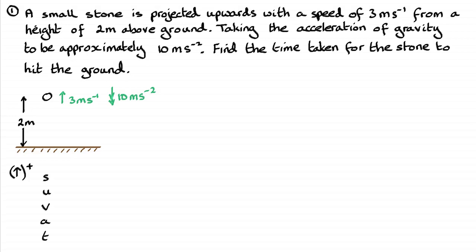It's a typical SUVAT-type equation where you've got to list your variables S, U, V, A and T. I've taken upwards as positive, which is always a good idea in the direction of motion, and we're starting from the point of projection. When we're trying to find the time taken to hit the ground, the stone is going to go up, come back down, and hit the ground. So S, the displacement, is going to be negative two if we start from up here. S is negative two.